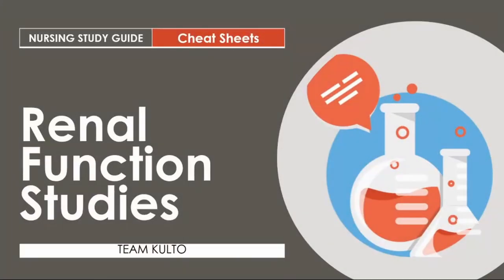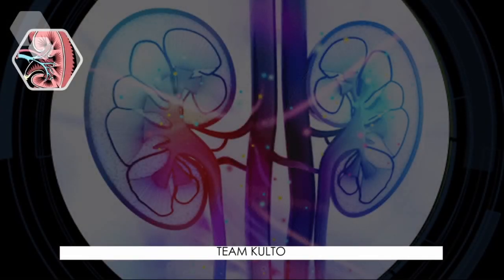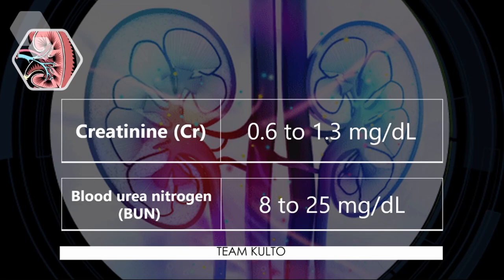Now let's move to our last part: renal function studies. Nurses, this is easy — there are just two values we normally look at in a renal function test. When we say renal, we're assessing the productive function of your kidneys. The two labs are creatinine and BUN. Creatinine: 0.6 to 1.3 mg per deciliter. Blood urea nitrogen, BUN: 8 to 25 mg per deciliter. And that concludes our lecture for today, nurses.